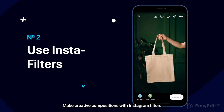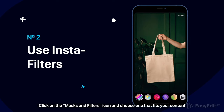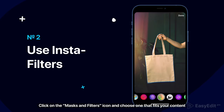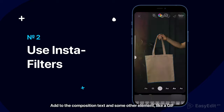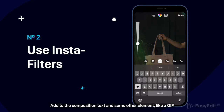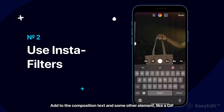Make creative compositions with Instagram filters. Click on the masks and filters icon and choose one that fits your content. Add to the composition text and some other elements, like a GIF.